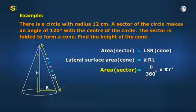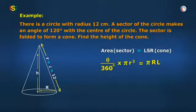Since area of the sector becomes equal to the lateral surface area of the cone, thus πRL = θ/360° × πr².